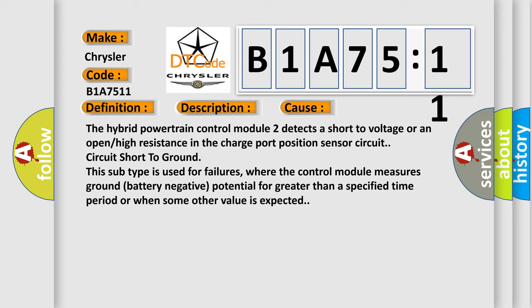Circuit short to ground. This subtype is used for failures where the control module measures ground battery negative potential for greater than a specified time period or when some other value is expected.